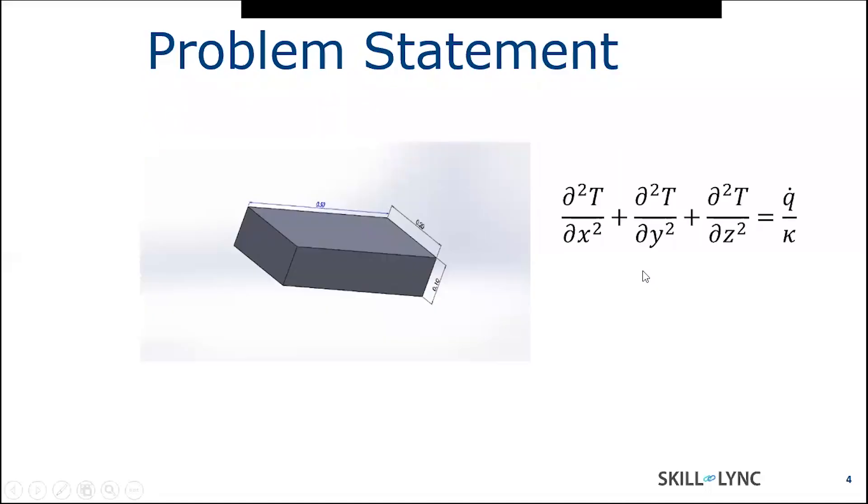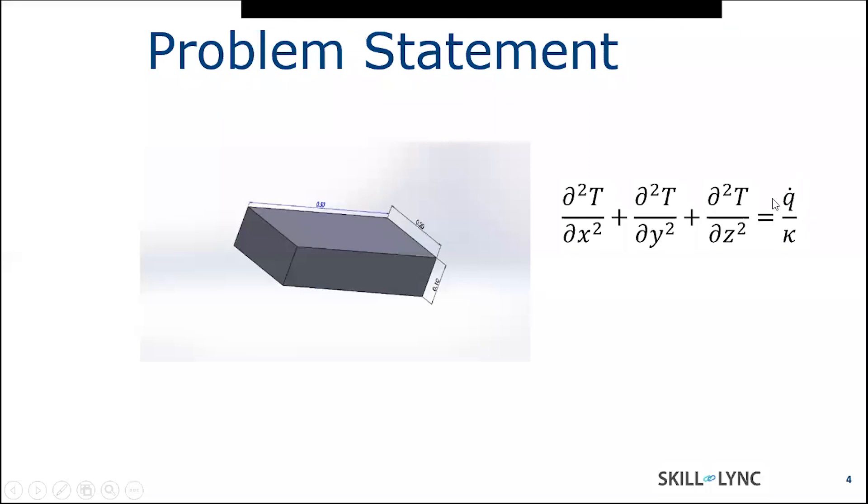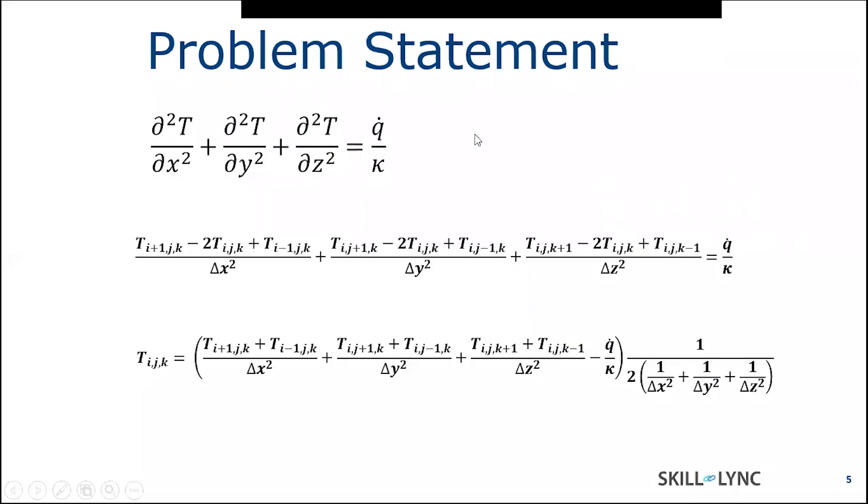Let's move towards the problem statement. This is the geometry of my problem. We have taken a rectangular bar with the internal heat source generation. And here is the equation what I am trying to solve. This is the Poisson equation with the internal heat source generation. This was the equation which we have to discretize. This is the second order accuracy and centrally discretized scheme. When you make T_ijk as the subject of the formula, you get the following equation as shown below.